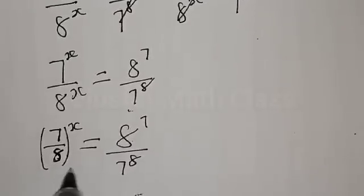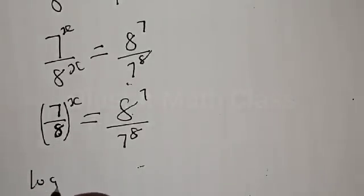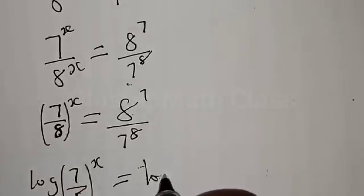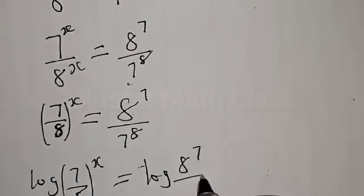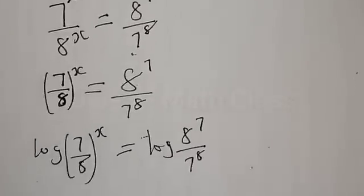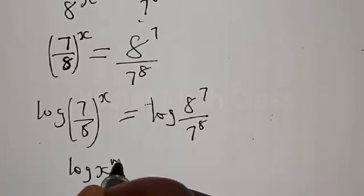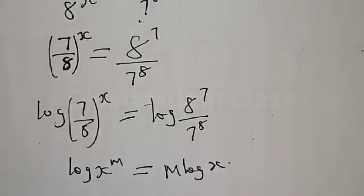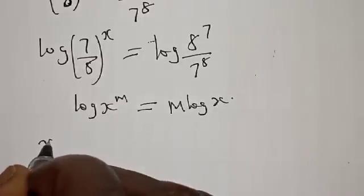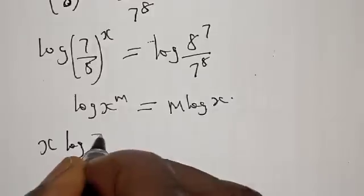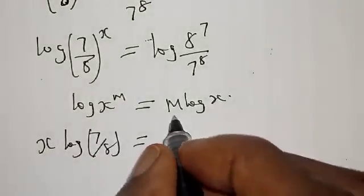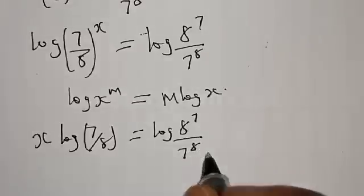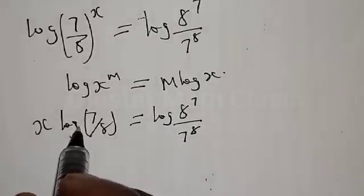Then let's take the log of both sides. We have log of 7 raised to power x over 8 raised to power x is equal to log of 8 raised to power 7 over 7 raised to power 8. Remember, if you have log s raised to power m, it is the same thing as m log x.